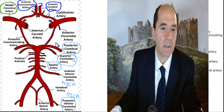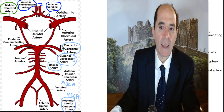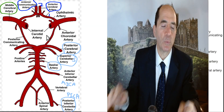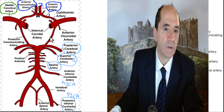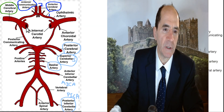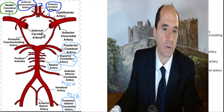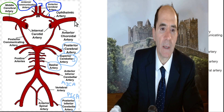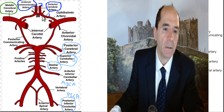This is the arterial anatomy of the brain. It's called the Circle of Willis, named after the anatomist Willis who discovered it. It almost looks like a little person. These are almost like the eyes — the internal carotid artery coming up into the brain. The internal carotid artery splits into the middle cerebral artery (MCA) and the anterior cerebral artery (ACA). Then there's a posterior cerebral artery, the PCA.